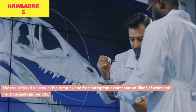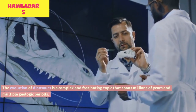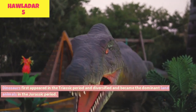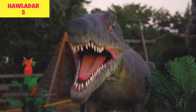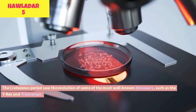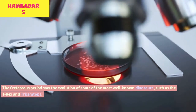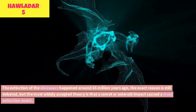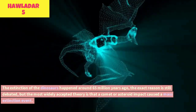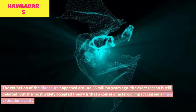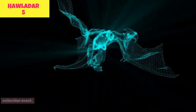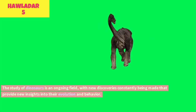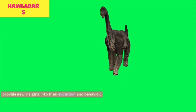The evolution of dinosaurs spans millions of years and multiple geologic periods. Dinosaurs first appeared in the Triassic period, diversified, and became the dominant land animals in the Jurassic period. The Cretaceous period saw the evolution of well-known dinosaurs such as the T-Rex and Triceratops. Their extinction happened around 65 million years ago, most likely caused by a comet or asteroid impact. The study of dinosaurs is an ongoing field, with new discoveries constantly providing new insights into their evolution and behavior.